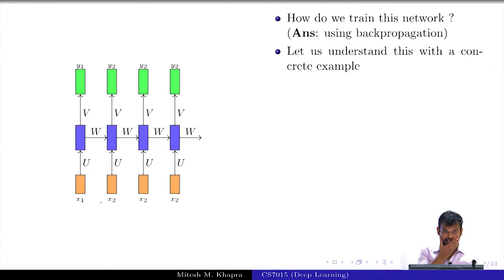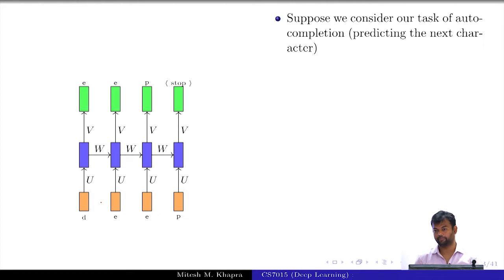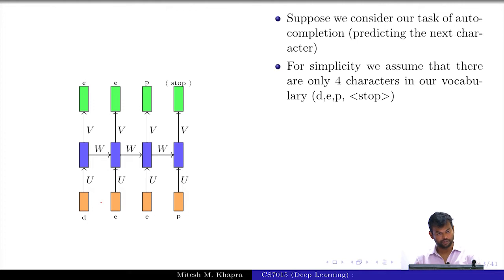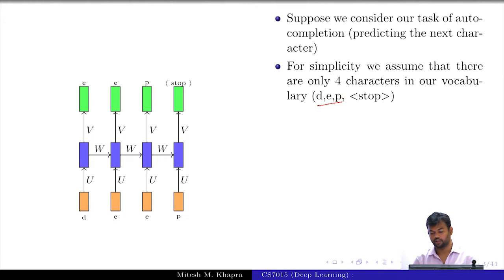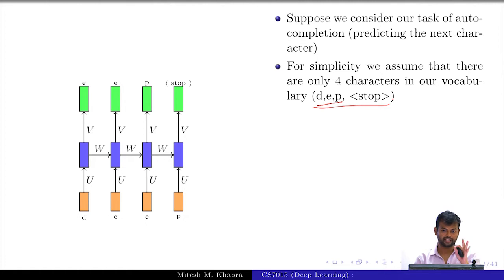We will try to understand this with the help of a concrete example and go back to our example of predicting characters. This is the auto-completion task. For simplicity, we will assume that English has only three characters — D, E, P — and then a stop to indicate the word has been completed. So my vocabulary size is just 4, meaning I can only predict one of these K=4 classes.